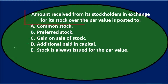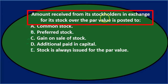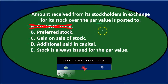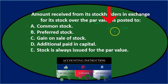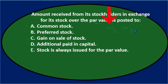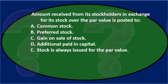Amount received from stockholders in exchange for its stock over the par value — posted to A, C, or D: common stock, gain on sale of stock, or additional paid-in capital. Common stock is going to be recorded at par value, so the overage won't go there. Think of the journal entry: we get cash — say $100 — common stock gets credited at par value, say $90, and the remaining $10 goes somewhere. Is it a gain or additional paid-in capital?